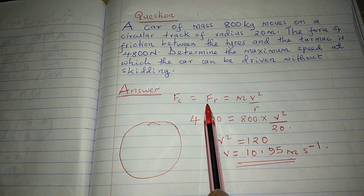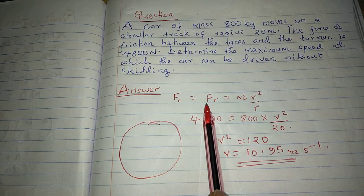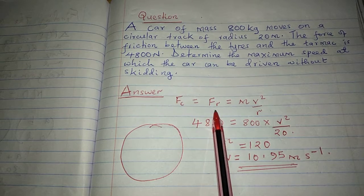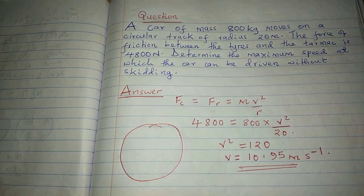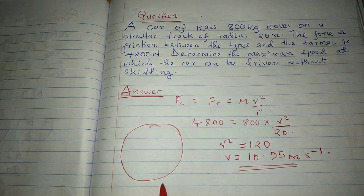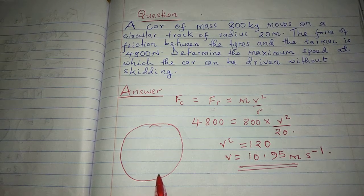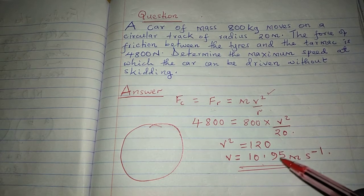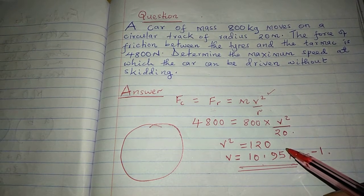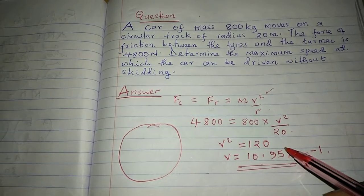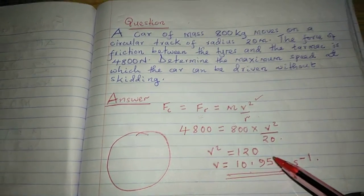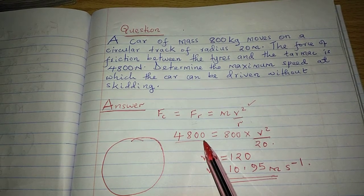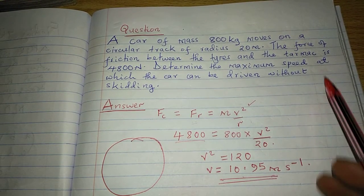When the centripetal force is greater than the frictional force, then it means the frictional force cannot hold the car in the circular path. And because due to an increased velocity beyond 10.95 meters per second, that car will require a greater centripetal force beyond what the car tires and the tarmac can provide. So that car is likely to skid off.